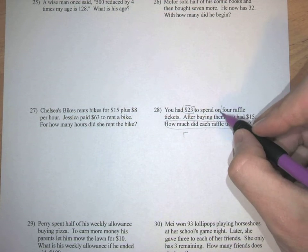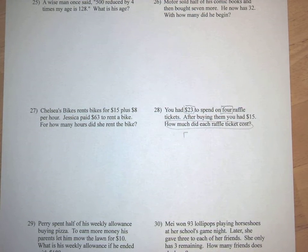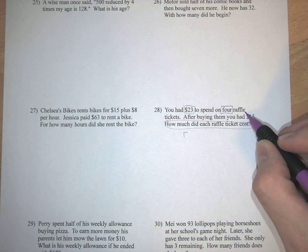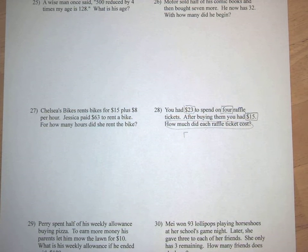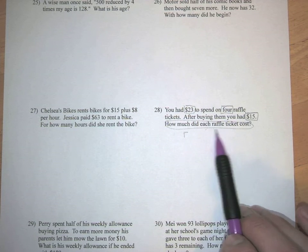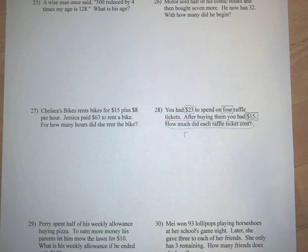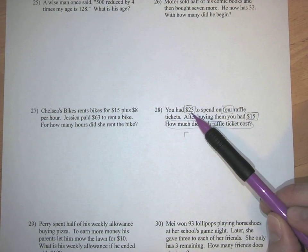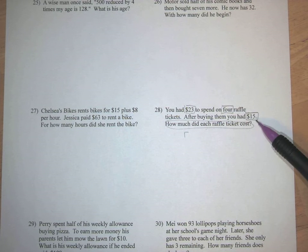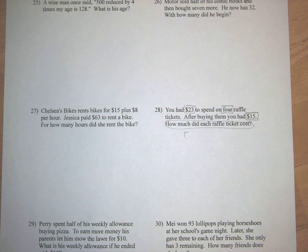Our second read: we're going to try to find all the quantities, all the amounts, and we're going to put a box around them. So $23 — that's a dollar amount. We got four raffle tickets, and we had $15 left at the end. Those are all important quantities. Now there's an unknown quantity here as well, and that's how much each raffle ticket costs, but we don't know what that is, so we can call that R. So make sure that all your quantities, known and unknown, are labeled. We got $23, four raffle tickets, $15 left at the end, and R is the price of one raffle ticket.